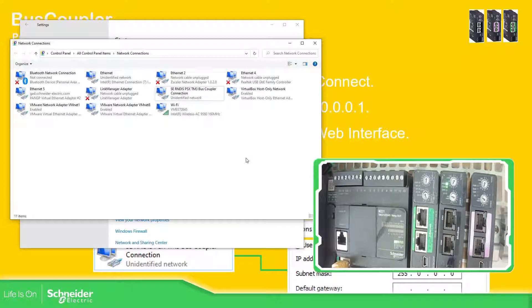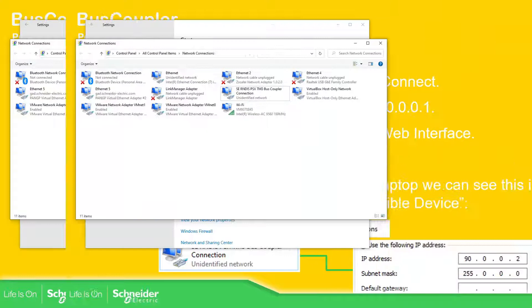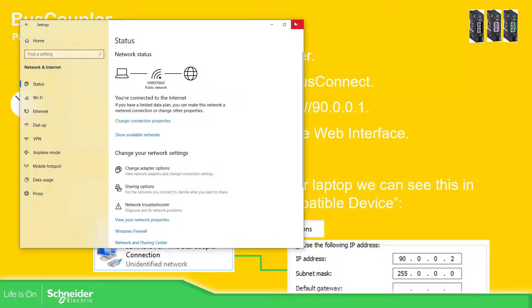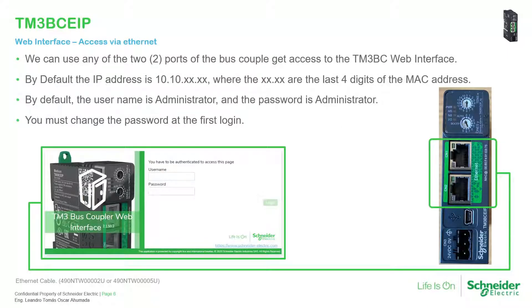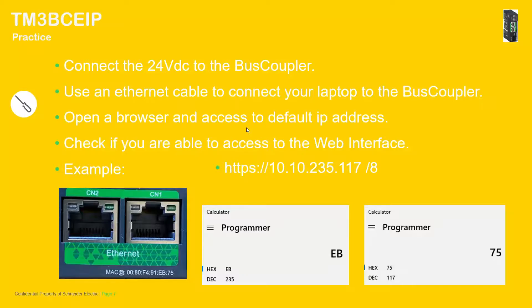I've already connected to this one. Now let me go back to the presentation. I'm going to disconnect and show you the Ethernet bus coupler. I already showed you how to use the serial and CAN open with the mini USB. For the Ethernet connection, we have the possibility to use the Ethernet ports. If the rotary switches are in the 'auto' position, we should be able to access the default IP address, which if it's new will be 10.10. followed by the last four digits of the MAC address.